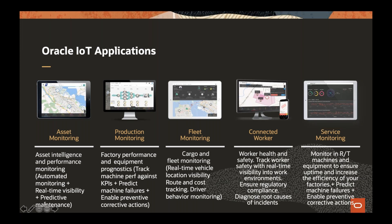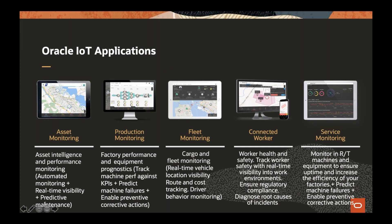The IoT service monitoring cloud is an IoT cloud designed to monitor machines and equipment in real-time to ensure uptime and increase the efficiency of factories. It is also designed to predict machine failures and enable preventive and corrective actions. We also have the fleet monitoring cloud as part of the portfolio.